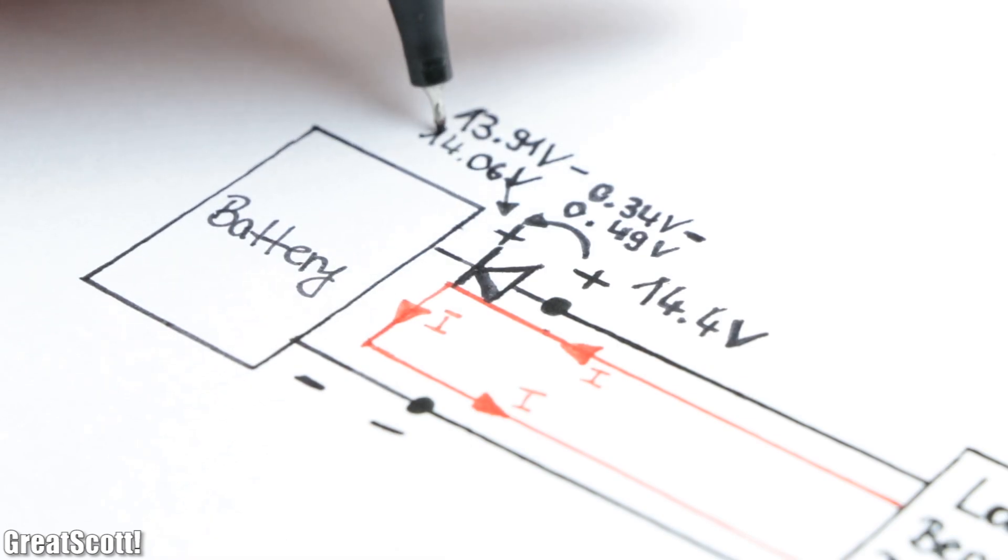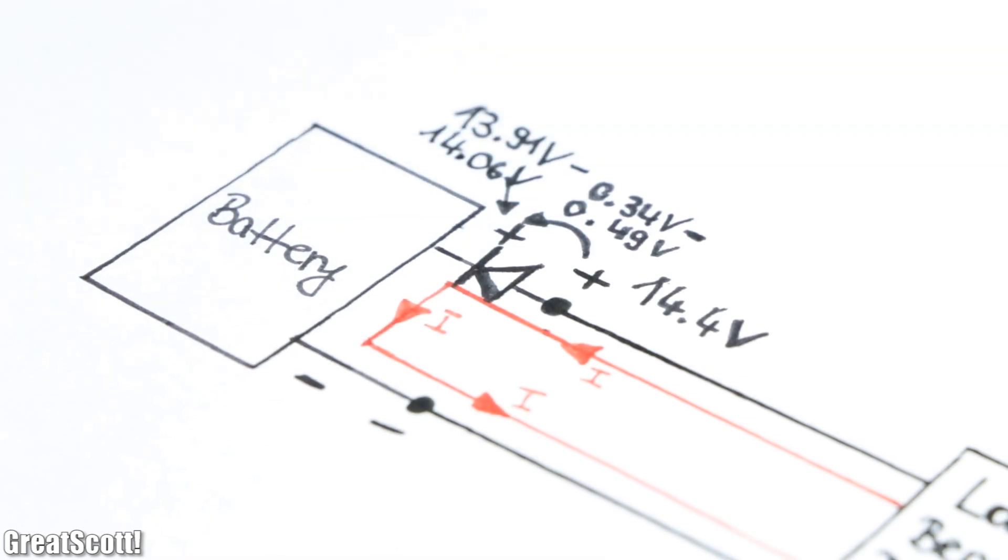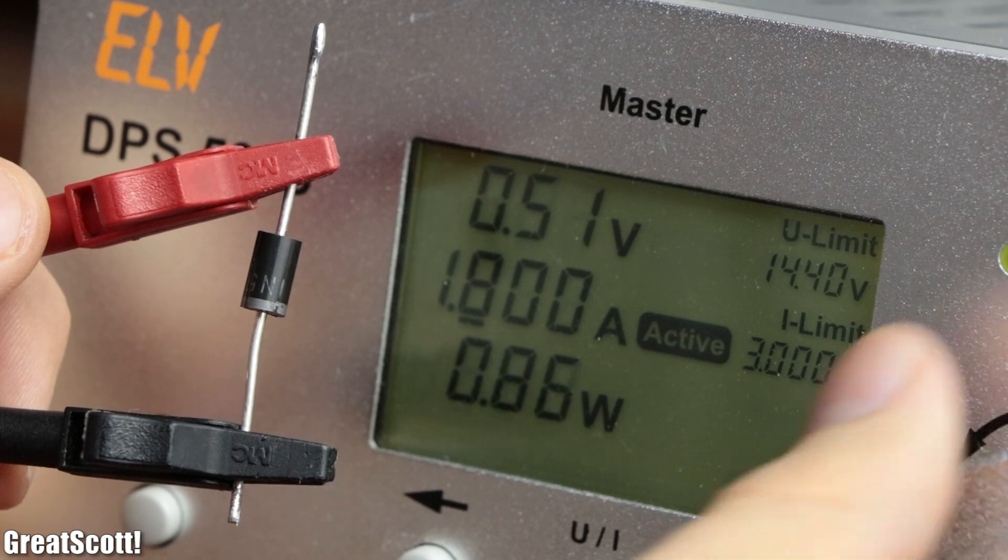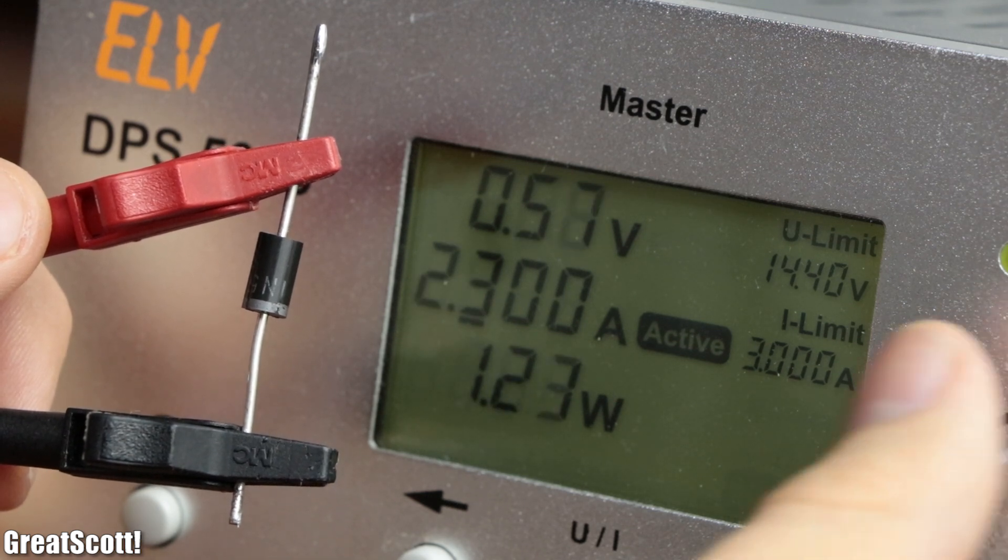And let's not forget that the voltage at the load is not stable due to the variable voltage drop of the diode according to the current flow.